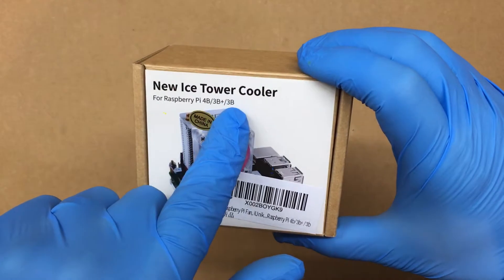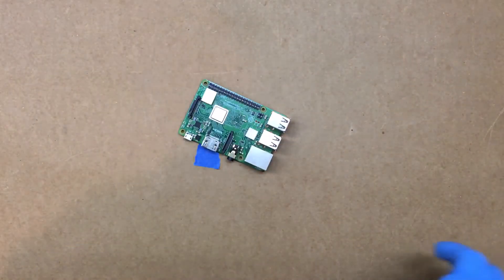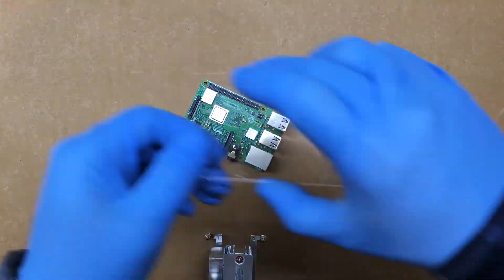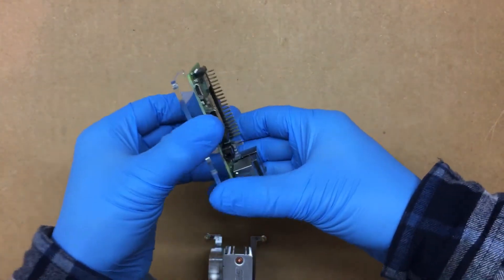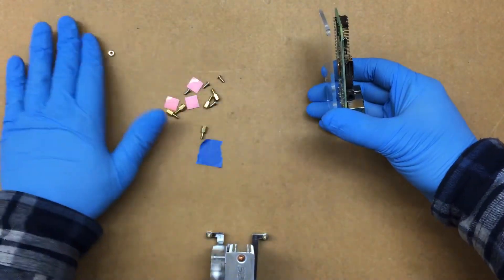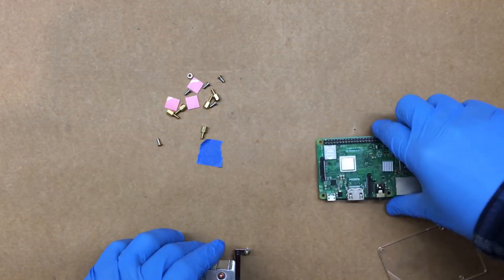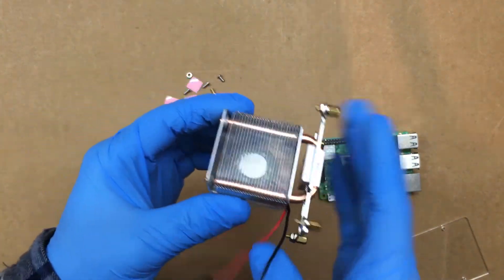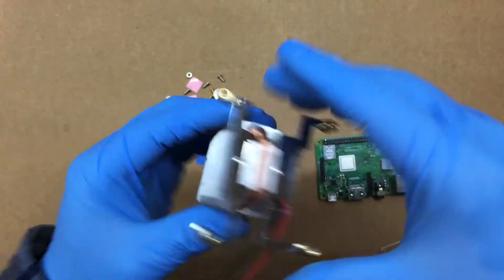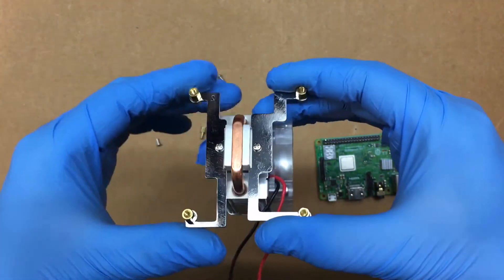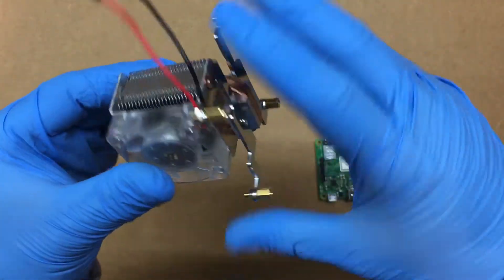I went ahead and already got it out. It comes with a little standoff-type thing that fits under here using some of this hardware. Then the tower cooler itself has nice little copper here, these two little standoffs, and then you have your fan. This is a 5-volt LED fan.